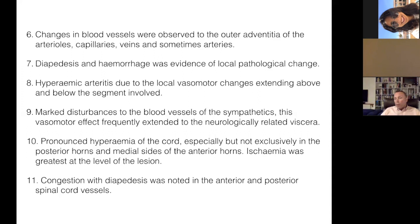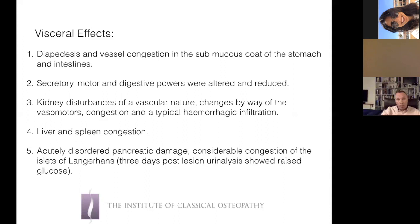Hyperemic arteritis was seen due to local vasomotor changes, which extended above and below the segment involved. There was marked disturbance to the blood vessels of the sympathetics, and this vasomotor effect frequently extended to the neurologically related viscera. There was pronounced hyperemia of the cord, especially in the posterior horns and medial sides of the anterior horns, and ischemia was greatest at the level of the lesion.